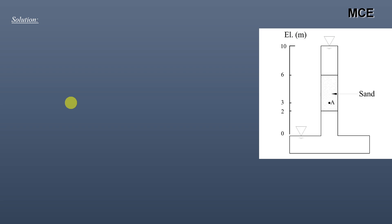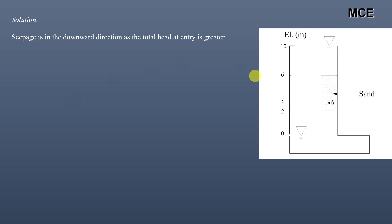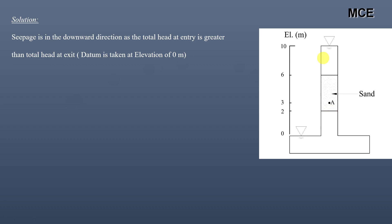First we will take Case A. For this case, seepage is in the downward direction because the total head at the entry end, at the elevation of 6 meters, is greater than the total head at the exit end, which is at the elevation of 2 meters. So seepage in this condition will flow in the downward direction.